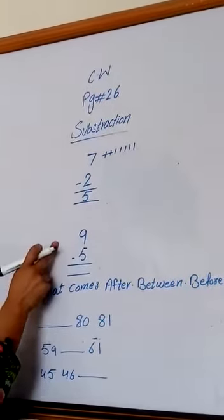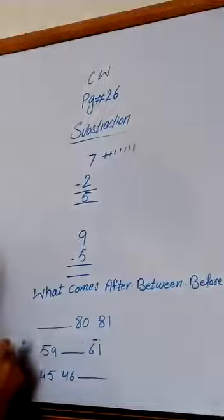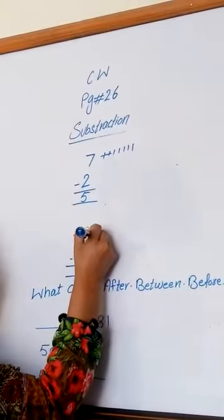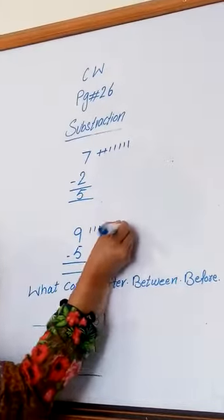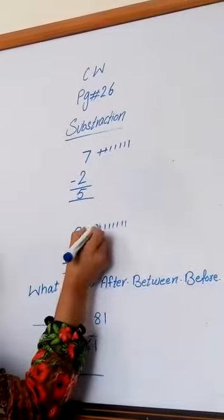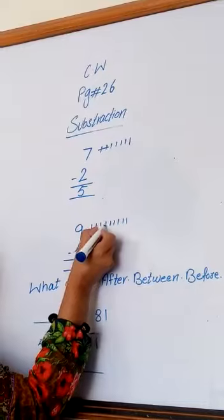Second question is 9 minus 5. Draw 9 lines: 1, 2, 3, 4, 5, 6, 7, 8, 9. Now cut 5 lines: 1, 2, 3, 4, 5.